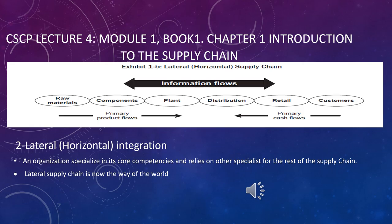The second type is the lateral or horizontal supply chain. Look at Exhibit 1-5: there are different companies in this supply chain model — a different company extracting material, different companies making components, then the plant, distributor, retailer, and customer. These are all different companies. As a definition, the lateral supply chain is an organization that specializes in its core competencies and relies on other specialists for the rest of the supply chain.